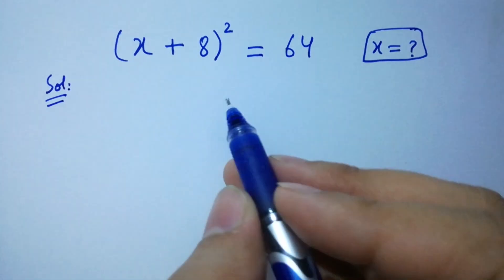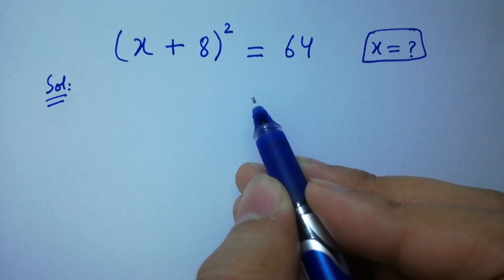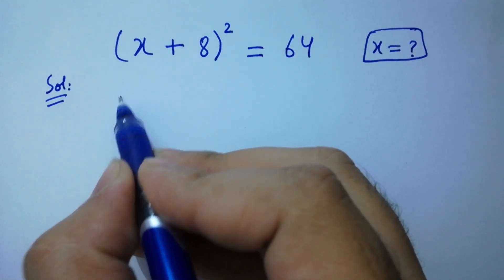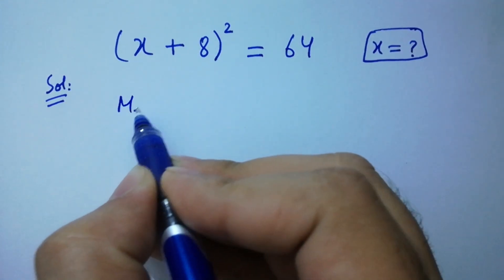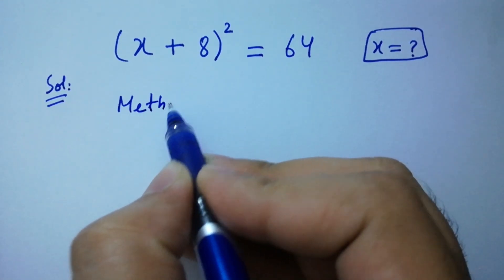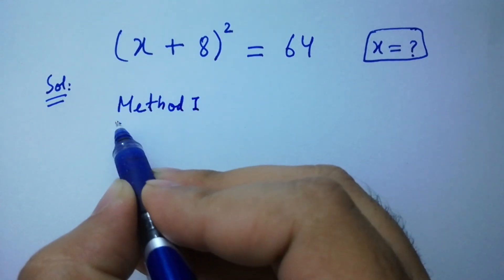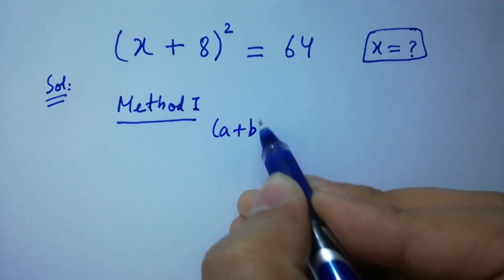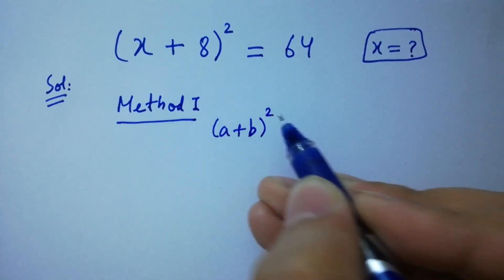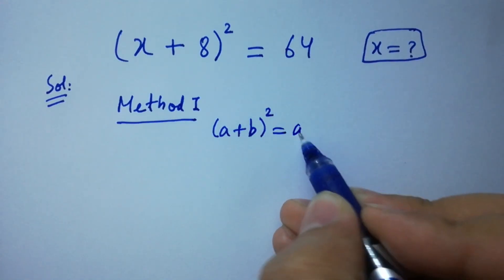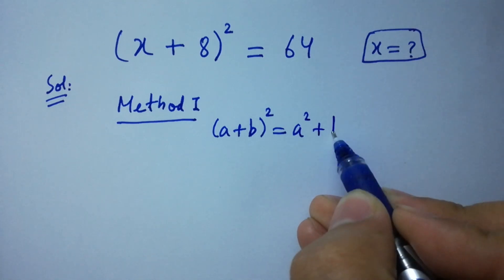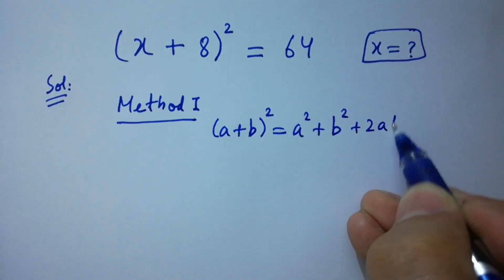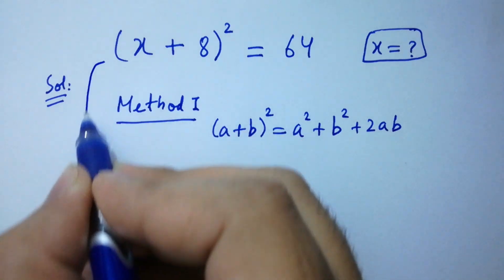This question can be solved by two methods. Method 1 uses the formula (a + b)² = a² + b² + 2ab. Apply this formula.